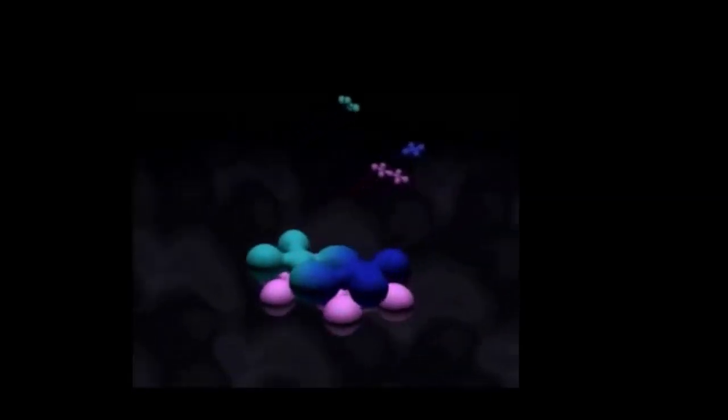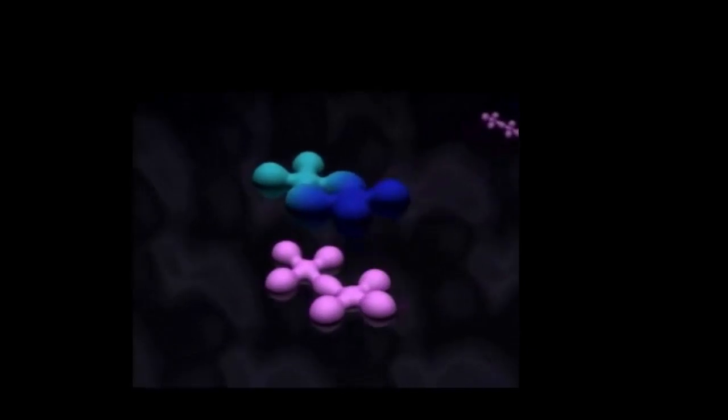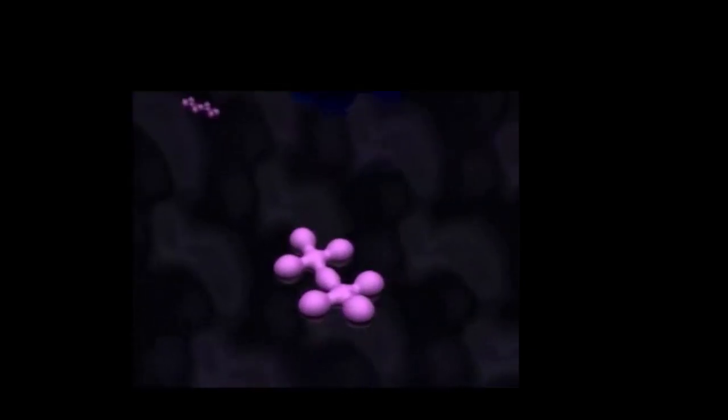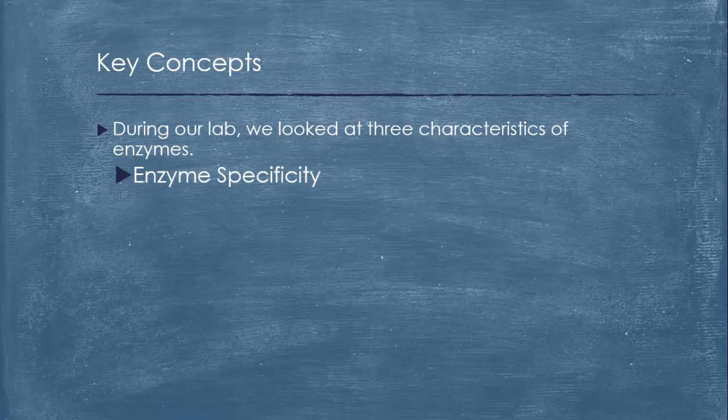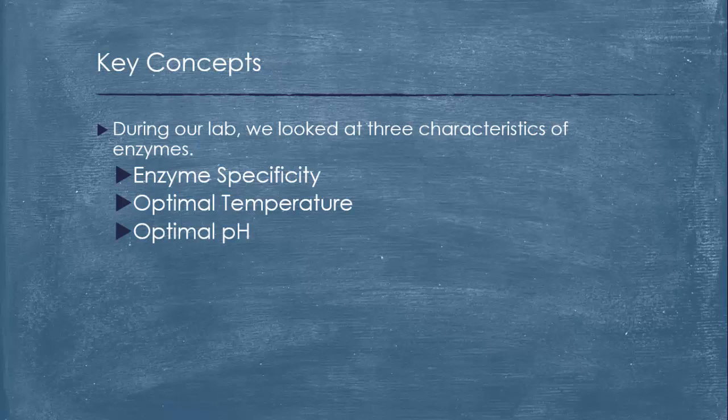In the enzyme substrate complex, the enzyme holds the substrate or substrates in a position where a reaction can occur easily. After the reaction, the enzyme releases the products and can go on to carry out the same reaction again and again. During our lab, we looked at three characteristics of enzymes: their specificity, their optimal temperature, and their optimal pH.